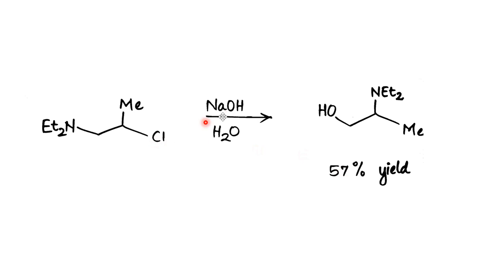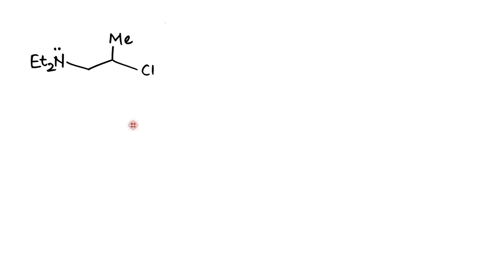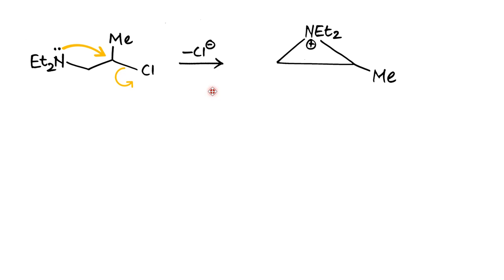This reaction takes place in the presence of OH⁻. The first intramolecular SN2 attack is done by nitrogen on this carbon, and Cl⁻ is eliminated out. The second intramolecular SN2 attack is carried out by OH⁻ on this carbon. Let's see the mechanism: the first intramolecular SN2 reaction takes place by this nitrogen acting as the NGP neighboring group participant, so the reaction rate is higher. The lone pair attacks this carbon and Cl⁻ is eliminated, giving a three-membered ring — an aziridium cation.